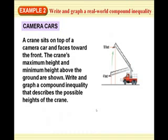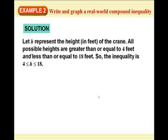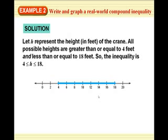A crane sits atop a camera car. The crane's maximum height and minimum height above the ground are shown. Write and graph a compound inequality that describes the possible heights of the crane. What's the lowest? 4 feet equal to 4 or 18. Just from the lowest to the highest. That's easy.